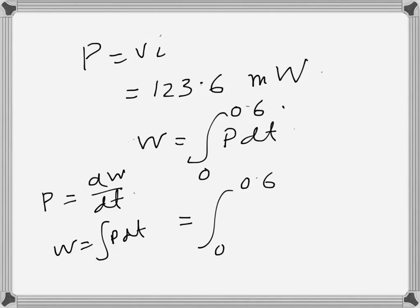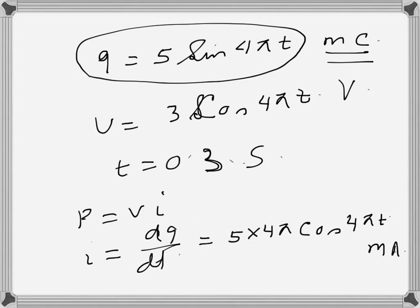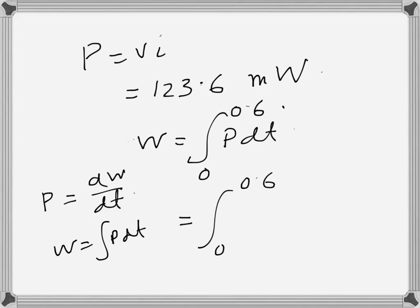Here we have this integration from 0 to 0.6. P is equal to vi, so we'll do it on the next page. 0 to 0.6, and v is 3 cos 4πt.